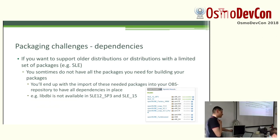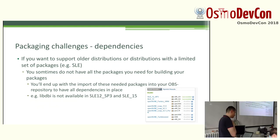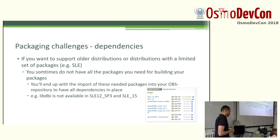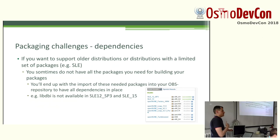For all distributions — like in this example — libdbi is not available in all SLES distributions. SLES is the enterprise distribution from SUSE and only contains around 6,000 packages, while OpenSUSE has 16,000 packages. When a dependency is not available, you also have to package it up as a build dependency for the packages that need it.